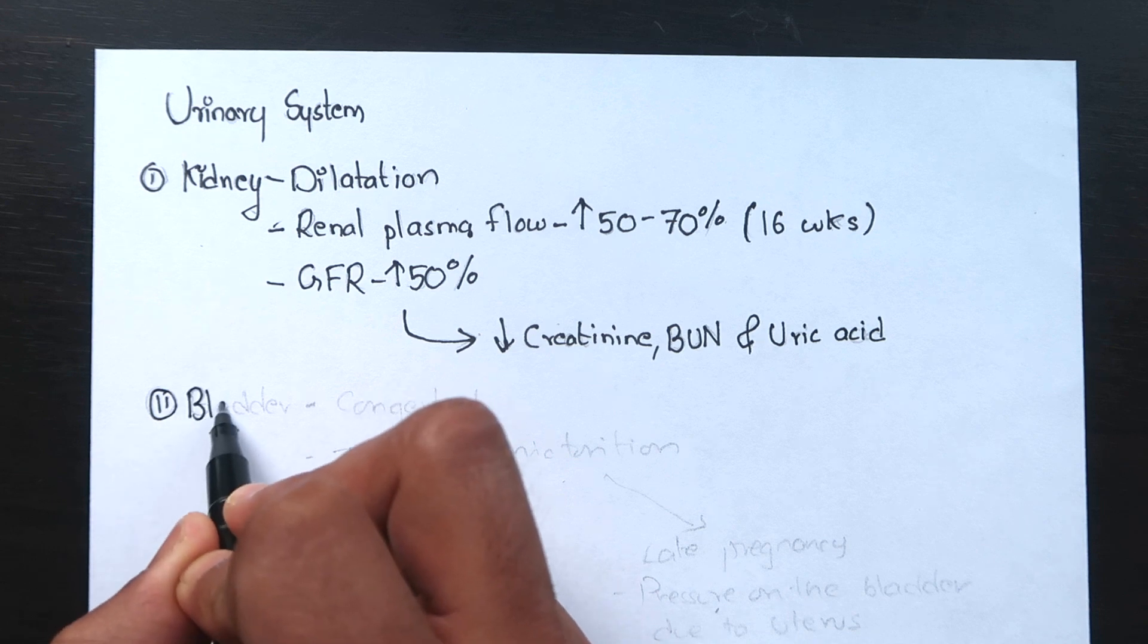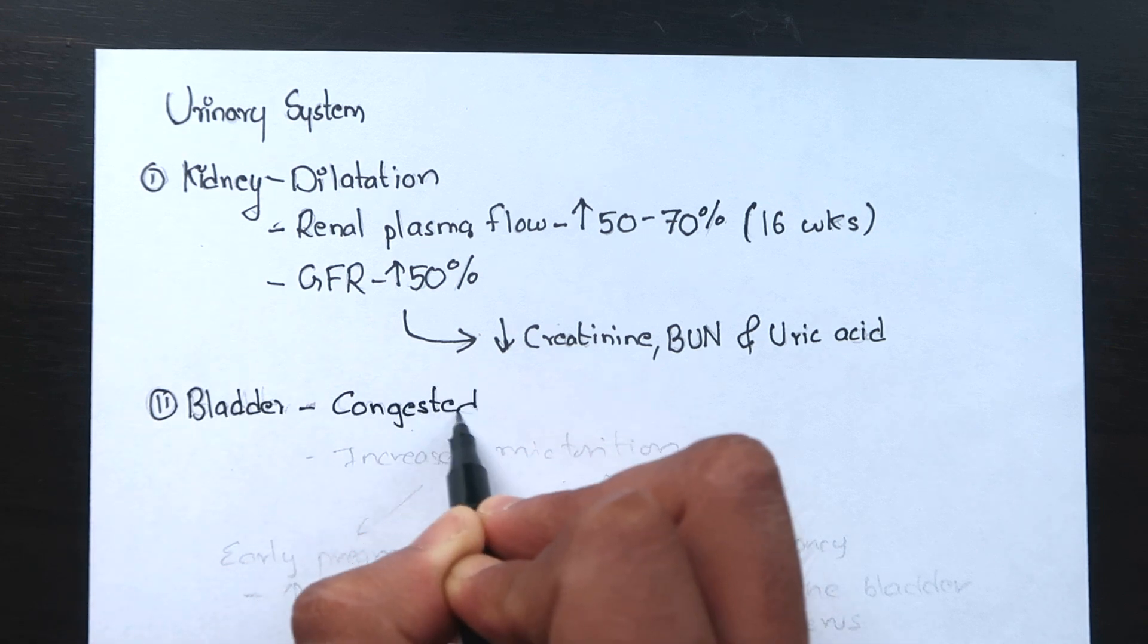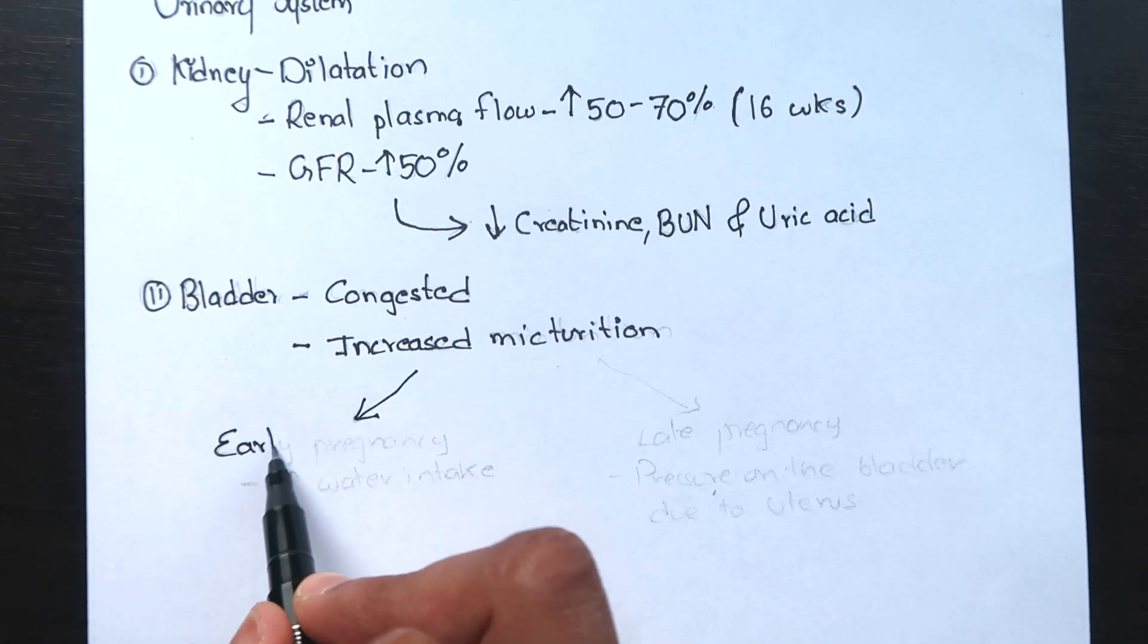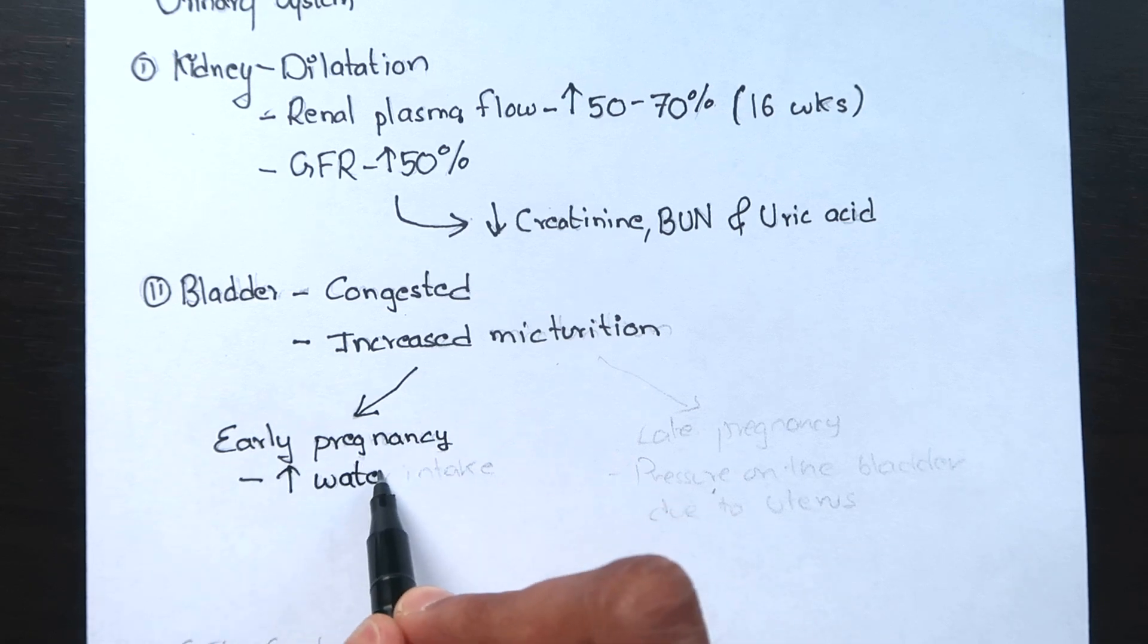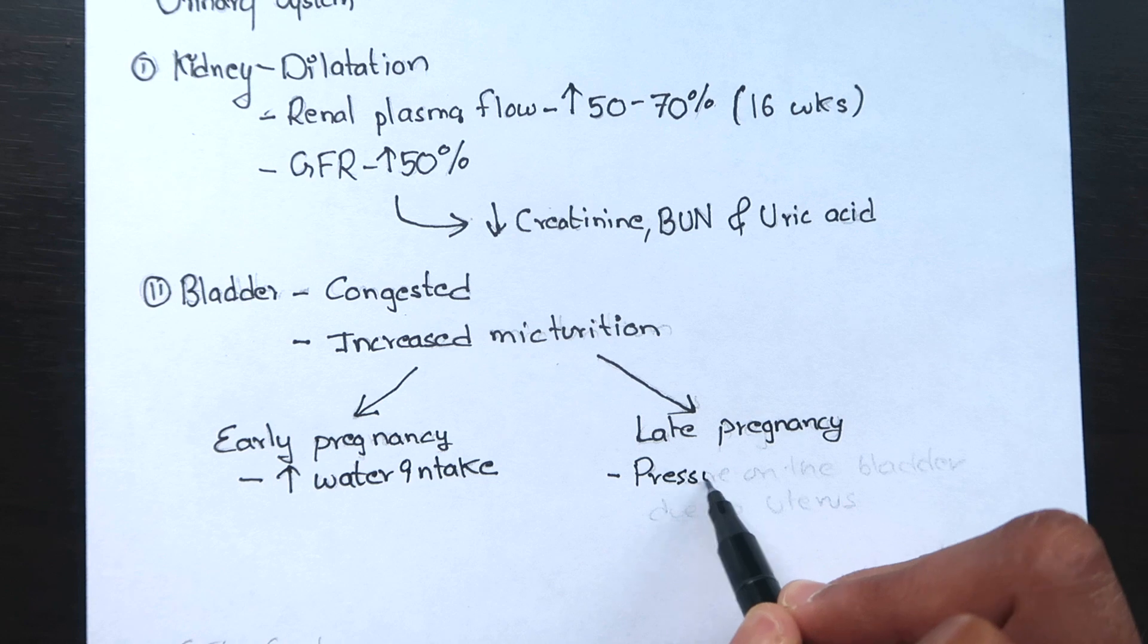In bladder, there is marked congestion with hypertrophy of muscles and elastic tissues of the wall. Increased micturition during early pregnancy may be due to increased water intake and in late pregnancy due to pressure on the bladder as the uterus rests over it.